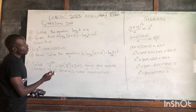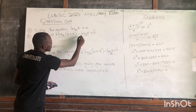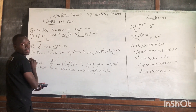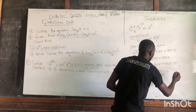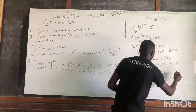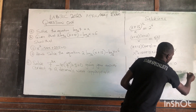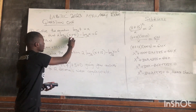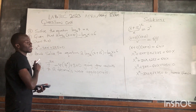Here we are told to express this logarithm expression in this quadratic form, which we have gotten here, so this one is hence shown. So we have shown that this logarithm expression in quadratic form is x squared minus 34x plus 225 equals 0.